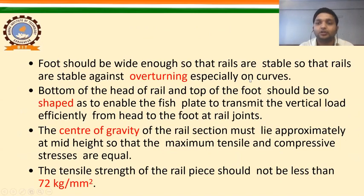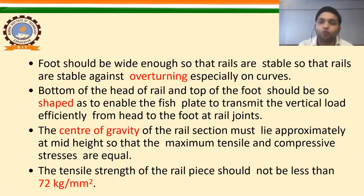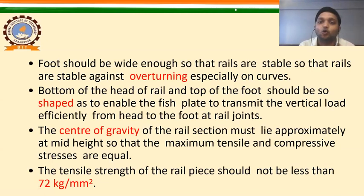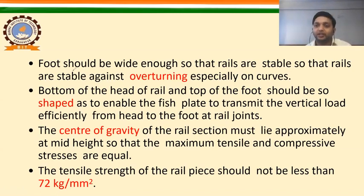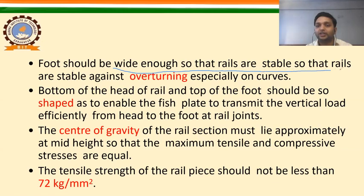The next requirement is that the foot should be wide enough so that the rails are stable against overturning, especially on curves. So we have three parts: the head should be deep, the web should be thick, and the foot should be wide enough for stability against overturning especially on curves.